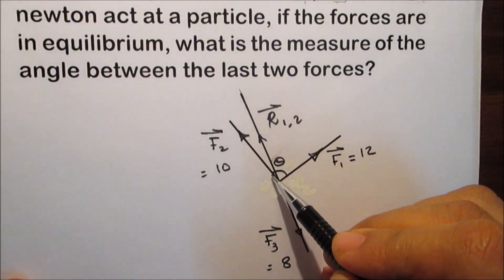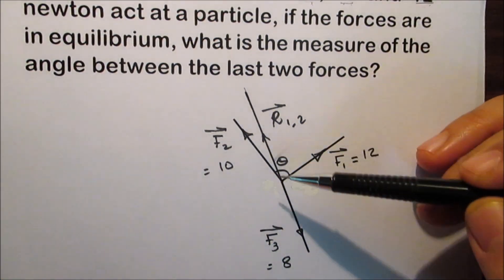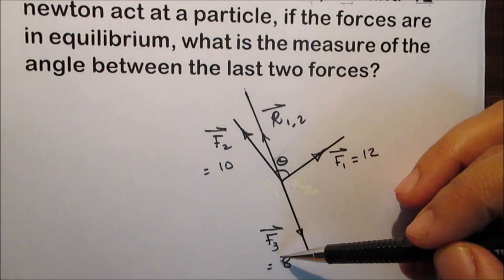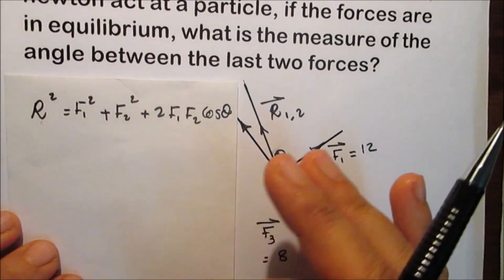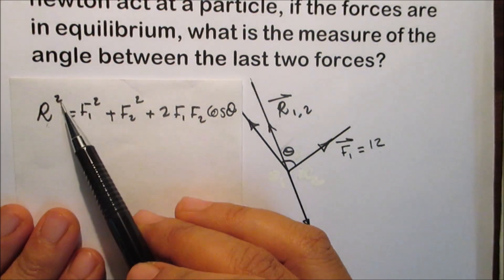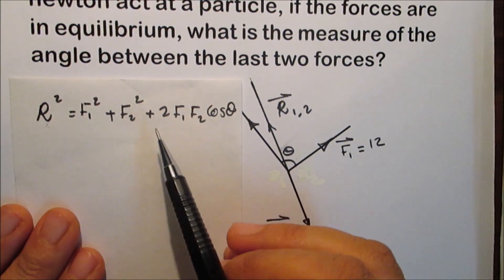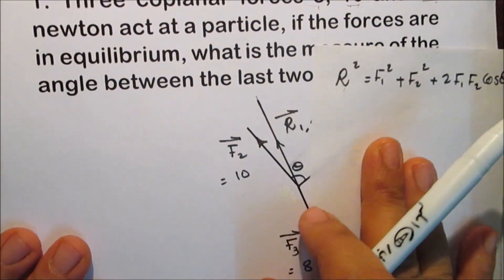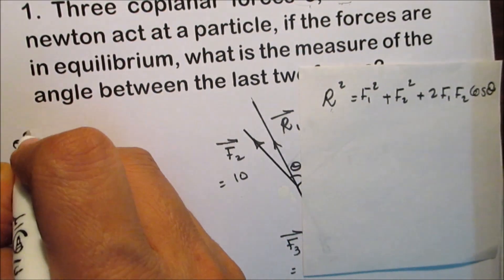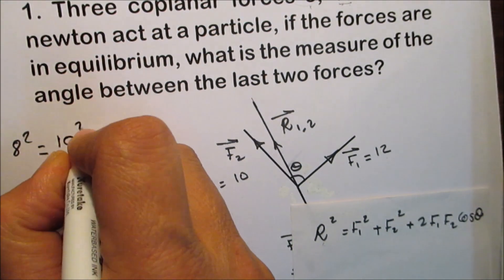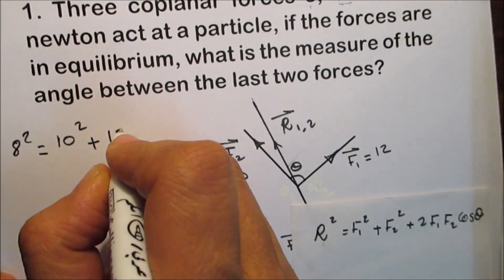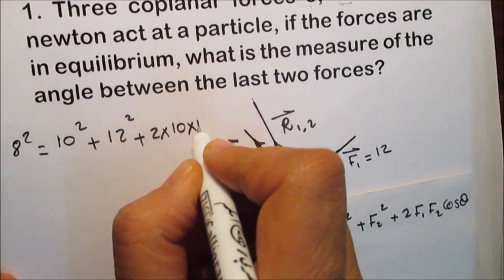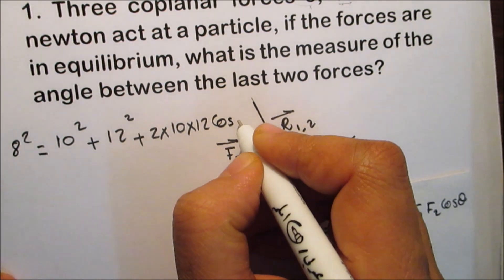The angle between F1 and F2 is theta. Since the three forces are in equilibrium, then the resultant of the two forces 10 and 12 equals the third force, which equals 8. The resultant of two forces: R squared equals F1 squared plus F2 squared plus 2 times F1 times F2 times cosine theta, where theta is the angle between F1 and F2. Then, with R equal to 8: 8 squared equals 10 squared plus 12 squared plus 2 times 10 times 12 times cosine theta.